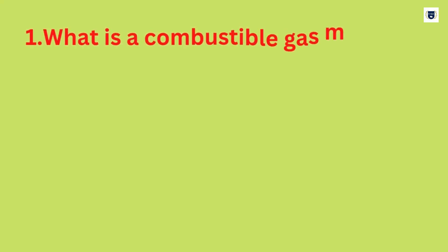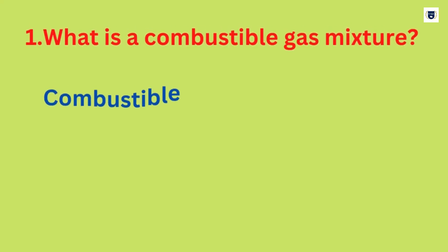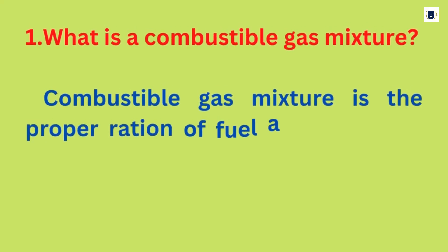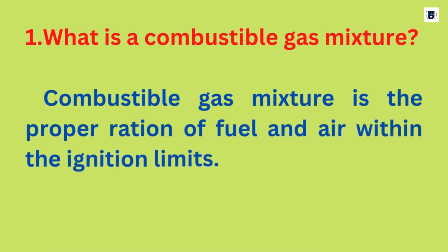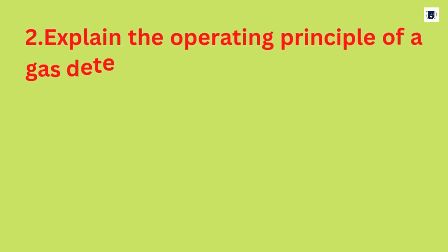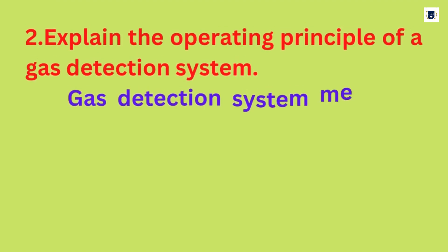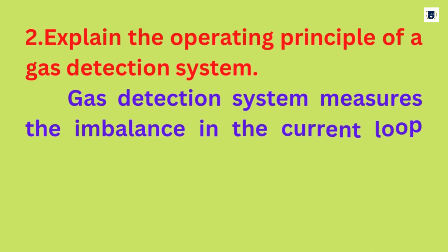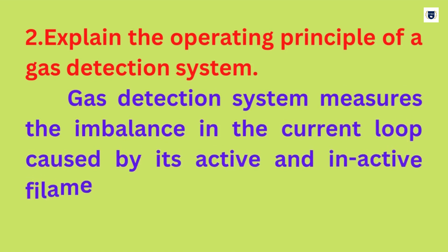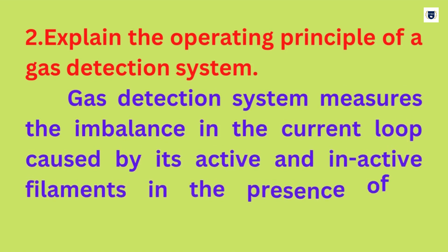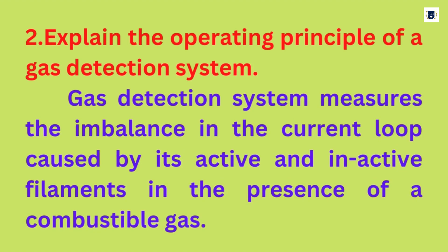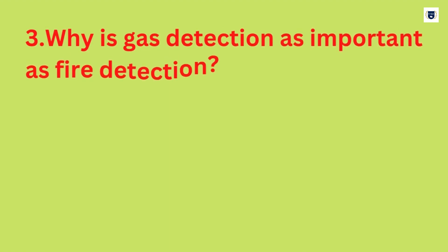What is a combustible gas mixture? A combustible gas mixture is the proper ratio of fuel and air within the ignition limits. What is the operating principle of a gas detection system? A gas detection system measures the imbalance in the current loop caused by its active and inactive filaments in the presence of a combustible gas.